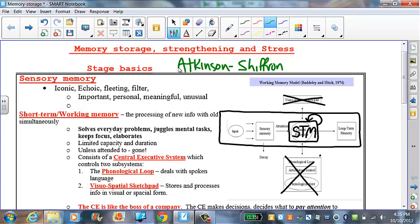The Atkinson-Schiffrin model is basically a model that describes the process of our memory system.